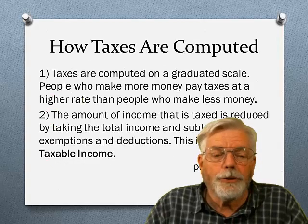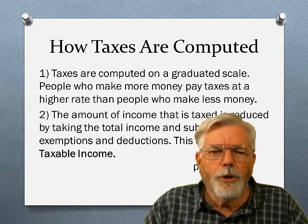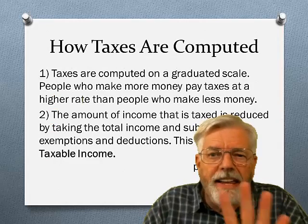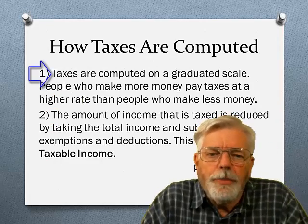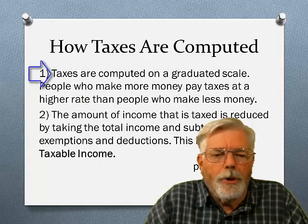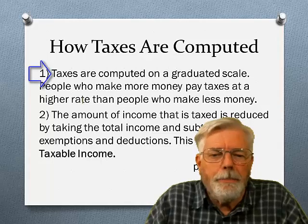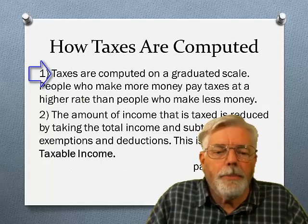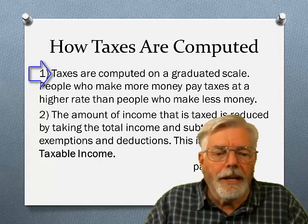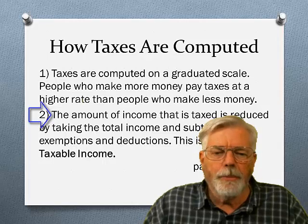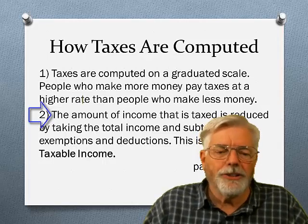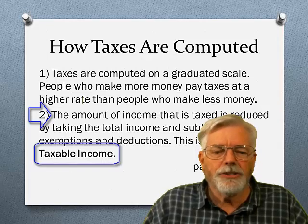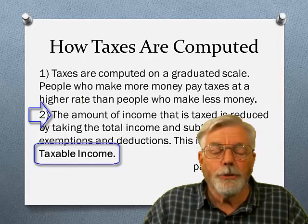Here is a very short course in how taxes are computed in five easy steps. Step 1: taxes are computed on a graduated scale — people who make more money pay taxes at a higher rate. Step 2: the amount of income that is taxed is reduced by subtracting exemptions and deductions from total income, and this is called taxable income.